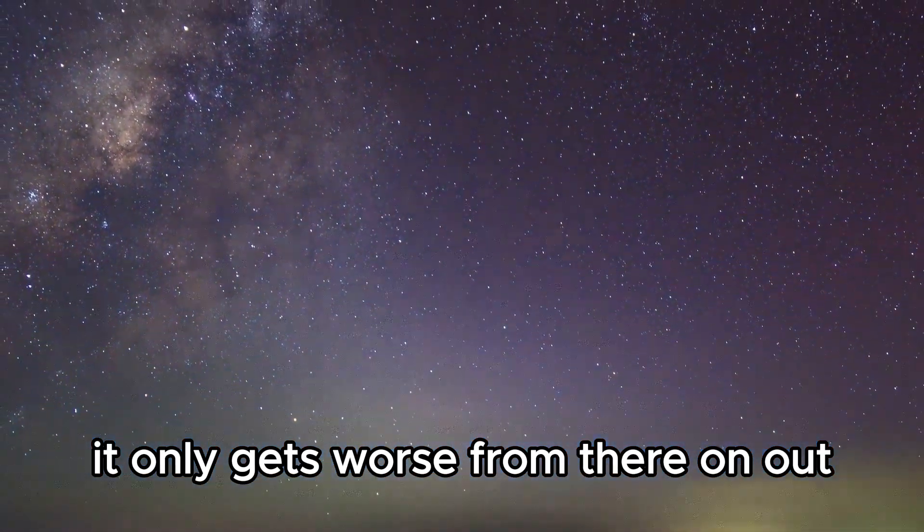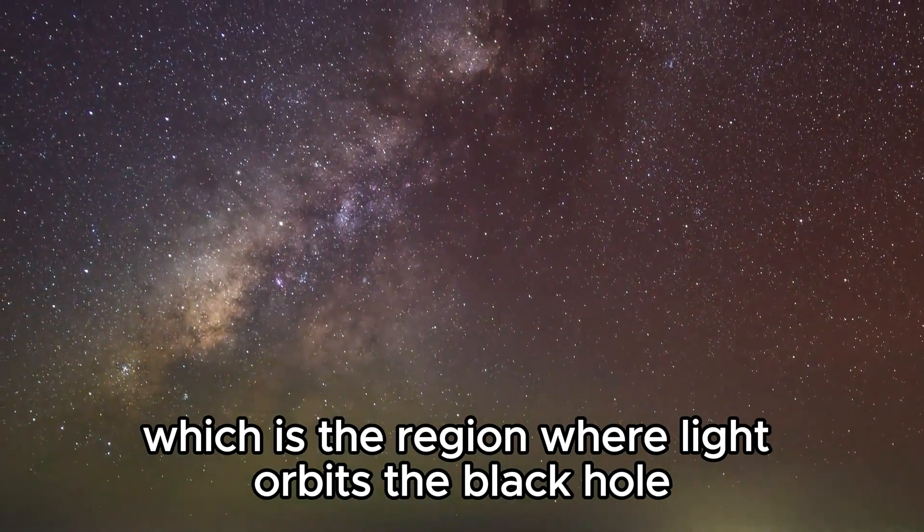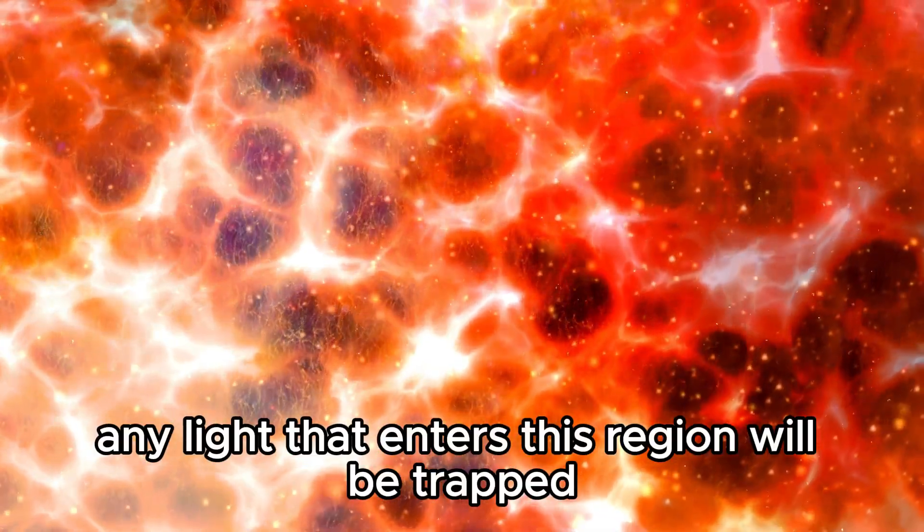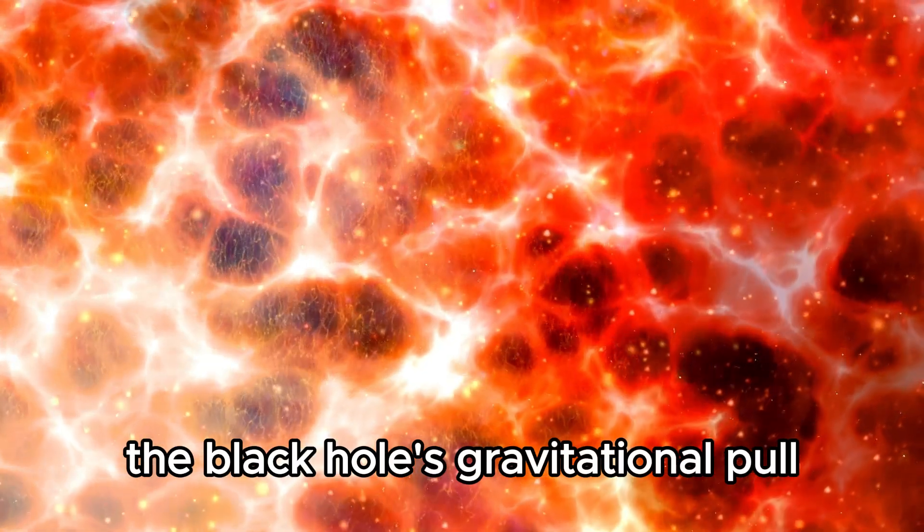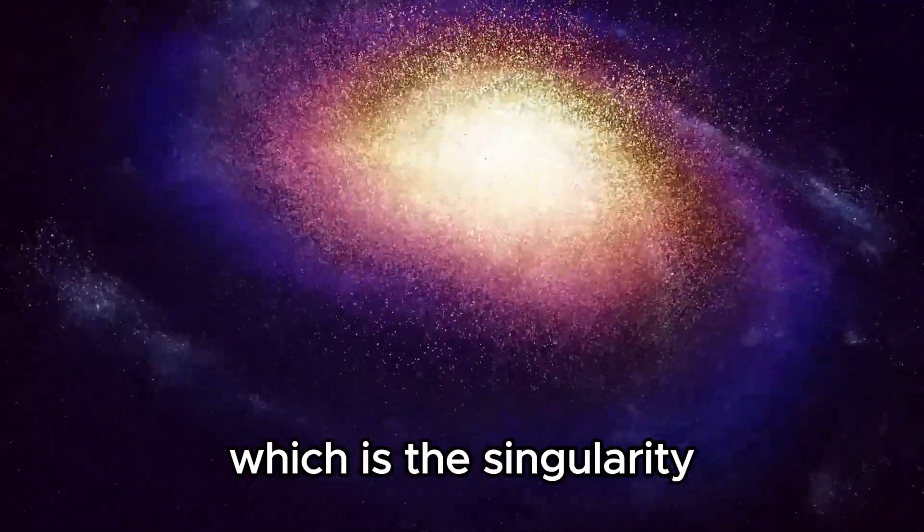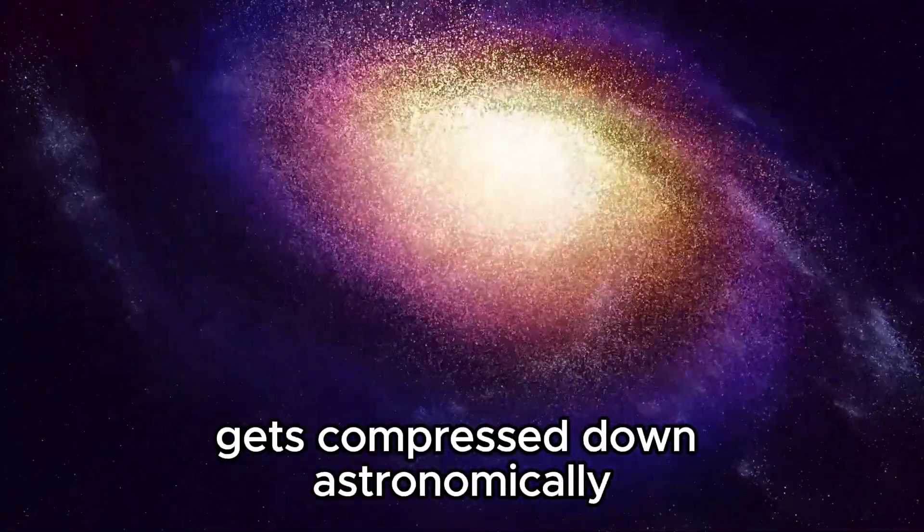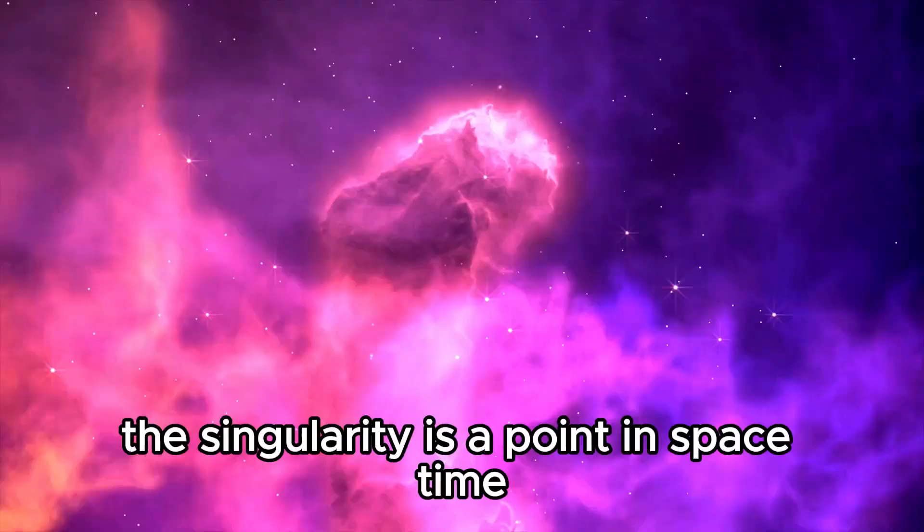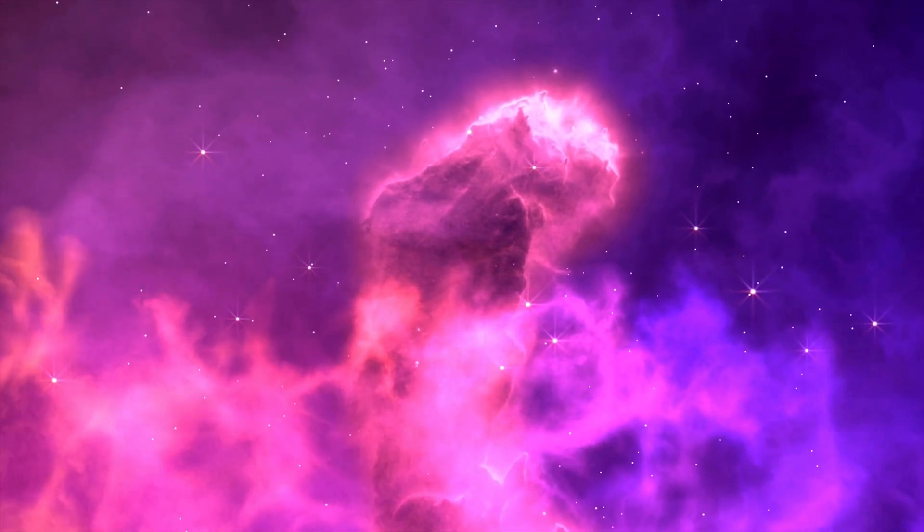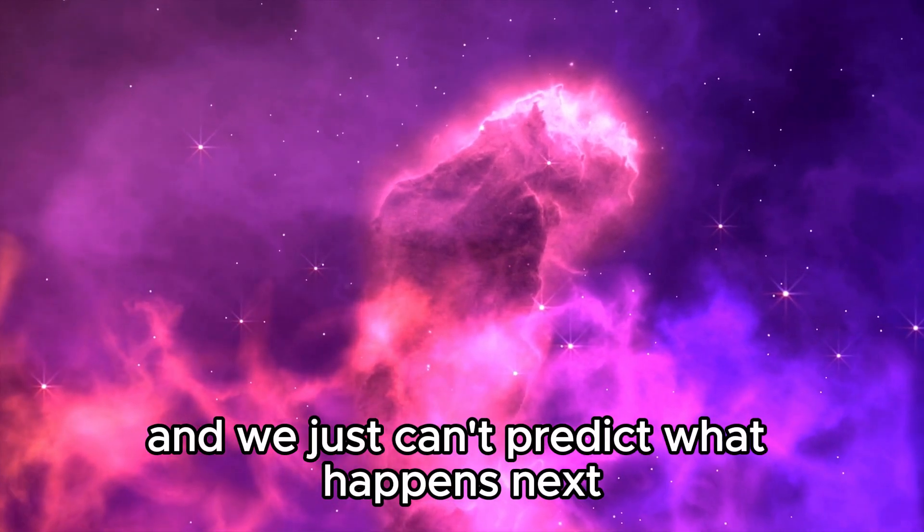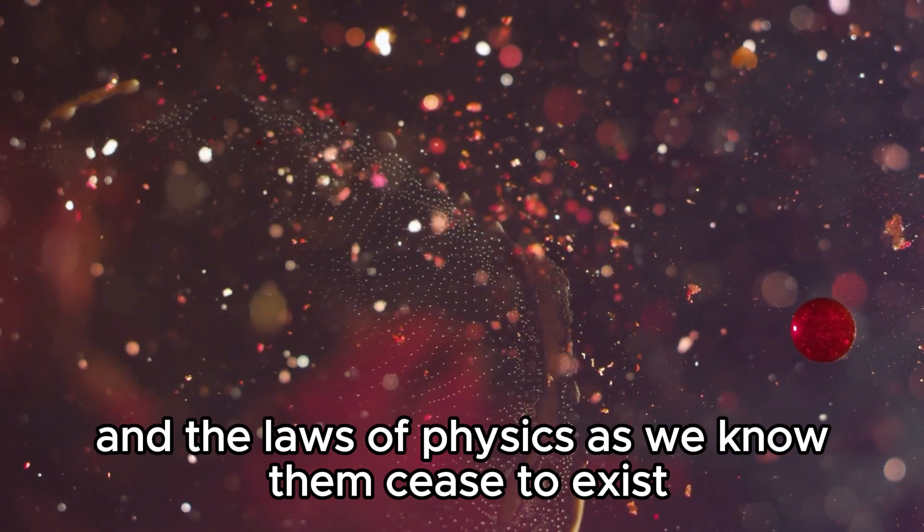The second layer is the photon sphere, which is the region where light orbits the black hole. Any light that enters this region will be trapped and will not be able to escape. Finally, we come to the third layer, which is the singularity. This is where everything gets compressed down astronomically until it becomes a singularity. The singularity is a point in space-time where the laws of physics as we know them break down, and we just can't predict what happens next. At the singularity, the density is infinite, and the laws of physics cease to exist.